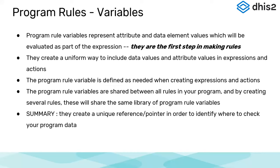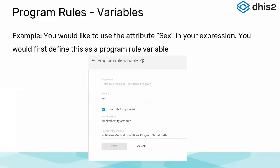The program rule variable is defined by the system designer and used in expressions. Once you create the program rule variable, it is available for any rule you create in the program — it's shared within that program. In summary, program rule variables create a unique reference or pointer to identify where to check the data when evaluating the expression. For example, if you want to display a data element only for females, you need to capture the sex attribute — you do that through a program rule variable.